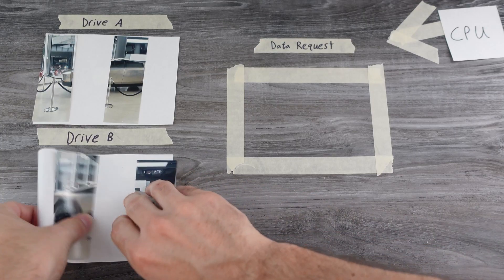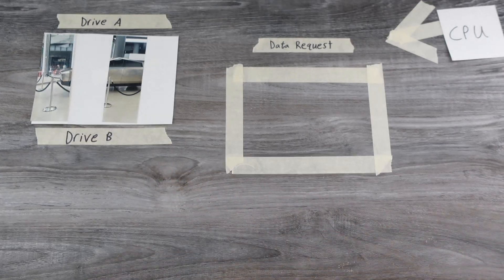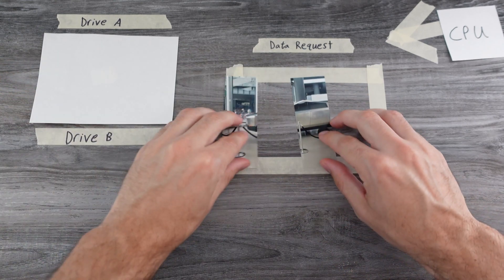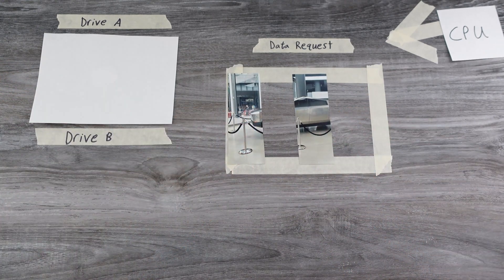The main disadvantage of RAID 0 is that if any one of those drives fails, you lose all your data. With more drives you get increased performance, but you also have an increased risk — if any one of those drives fails, the entire file is corrupted.